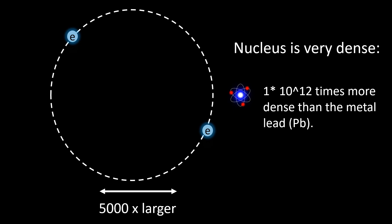This also means that the density of the nucleus is enormous—for example, more than 1 × 10^12 times that of the metal lead.